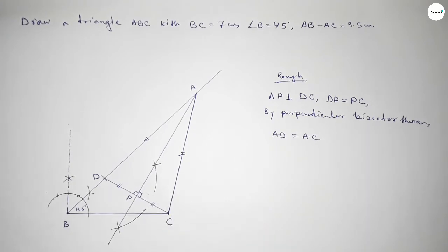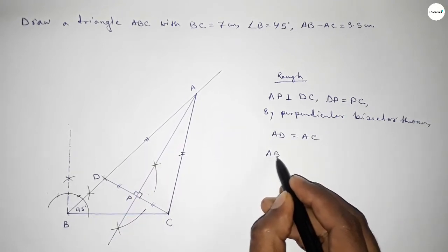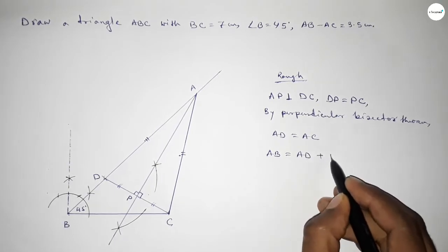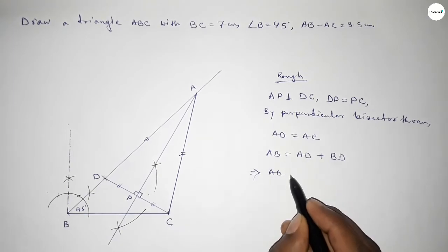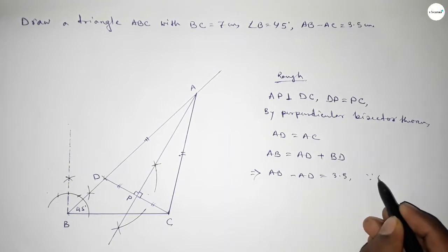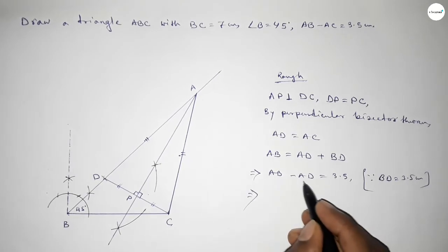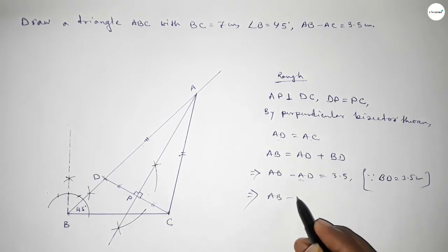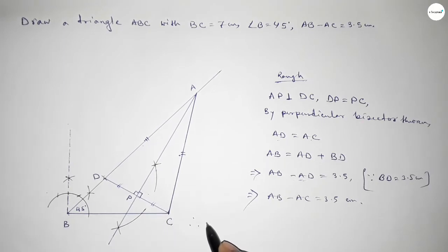This length and this length are equal. Now we can write AB equals AD plus BD, so AB equals AD plus BD. This implies AB minus AD equals 3.5 centimeters, since BD equals 3.5 centimeters. Since AD equals AC, this implies AB minus AC equals 3.5 centimeters. That's the proof.